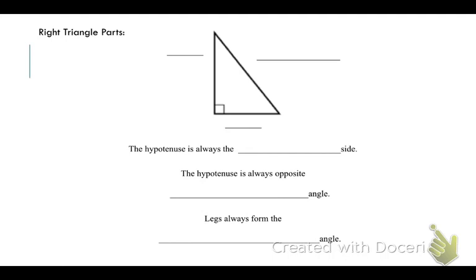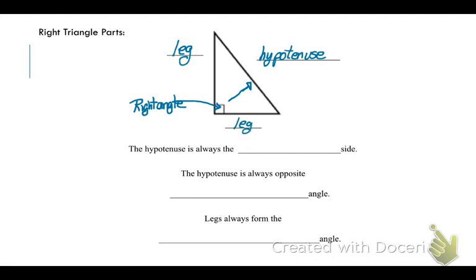Before we do this, we need to talk about right triangles, because hypotenuse leg can only be used when you have two right triangles. A right triangle has one angle that is a right angle, shown by a little box — you need to label that on your diagram. The side opposite the right angle is always called the hypotenuse, and it is the longest side of the triangle. The other two sides are called legs, and they always form the right angle — where the two legs meet is your right angle.